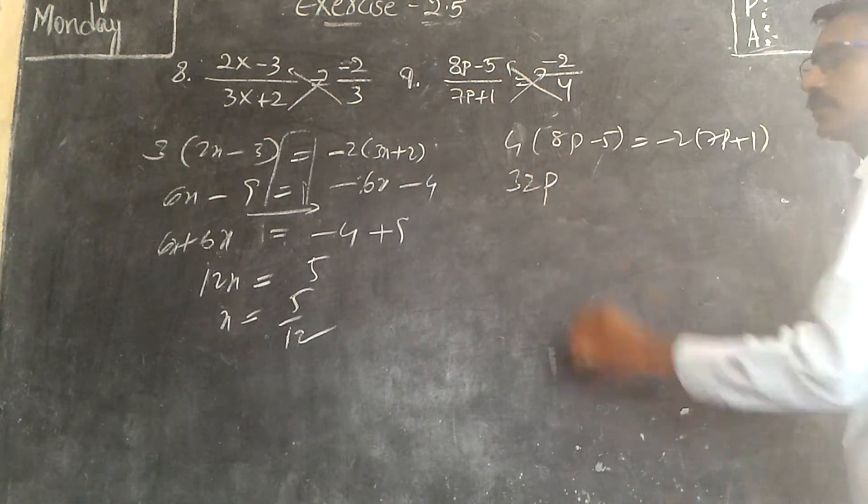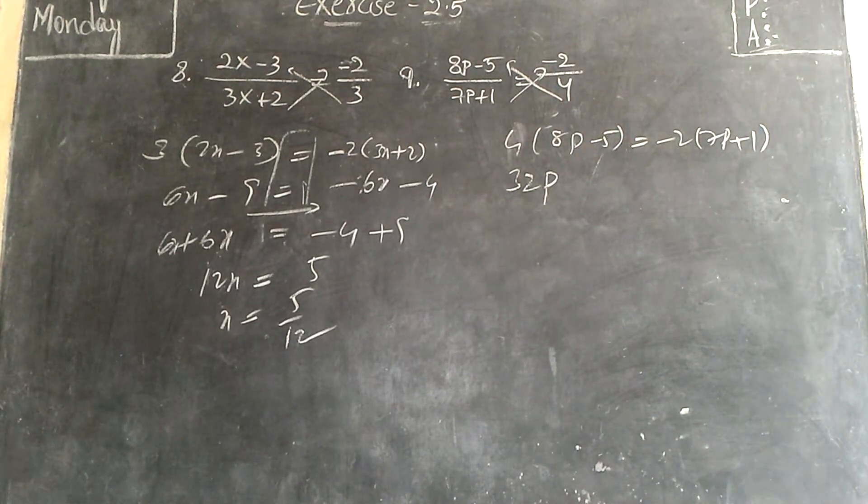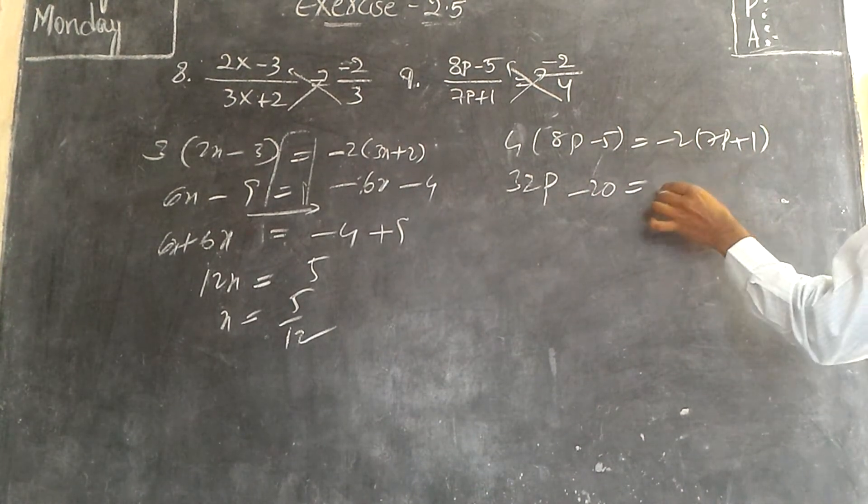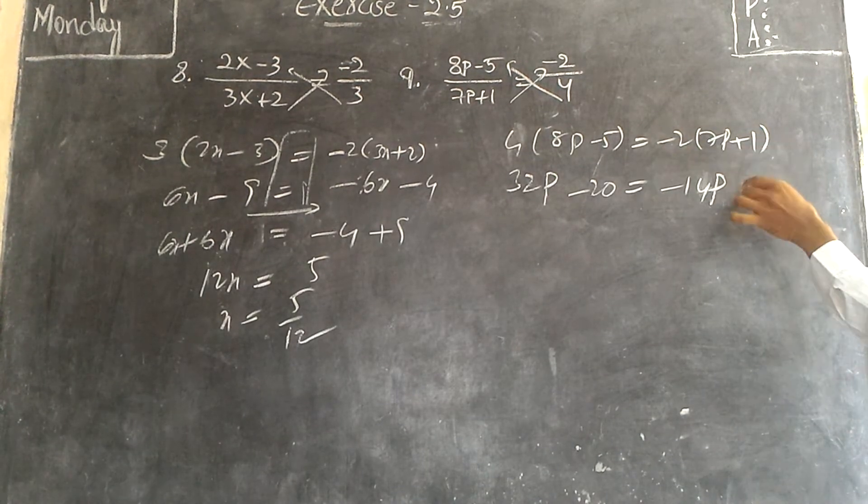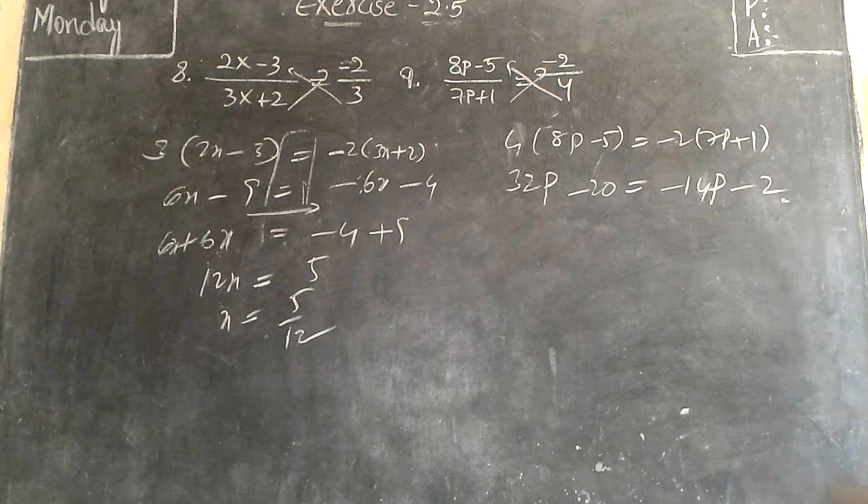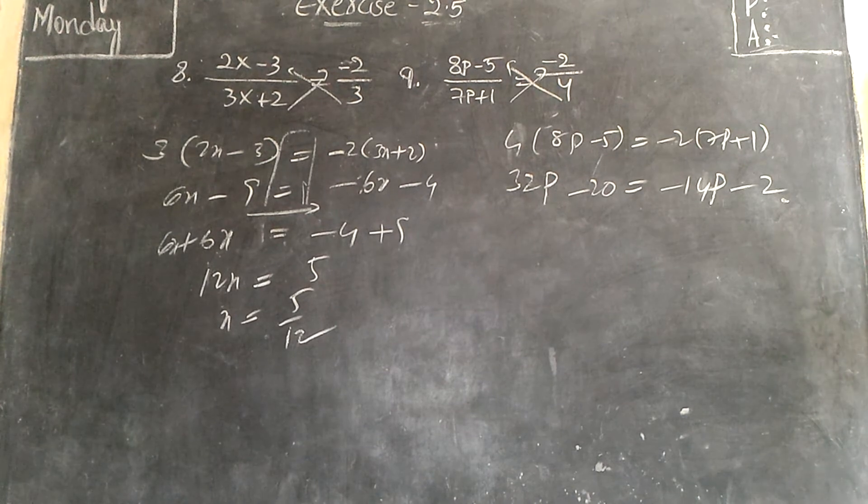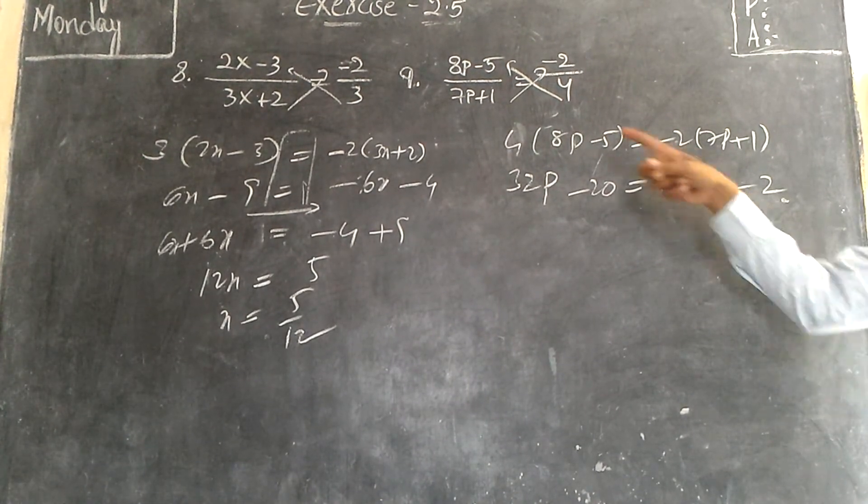4 times 8 is 32p, 4 times 5 is minus. Minus 2, this equals, 7 times 2 is 14p. Minus into minus is minus, minus into plus is minus. Minus 2 times 1. Is there any doubt in it?